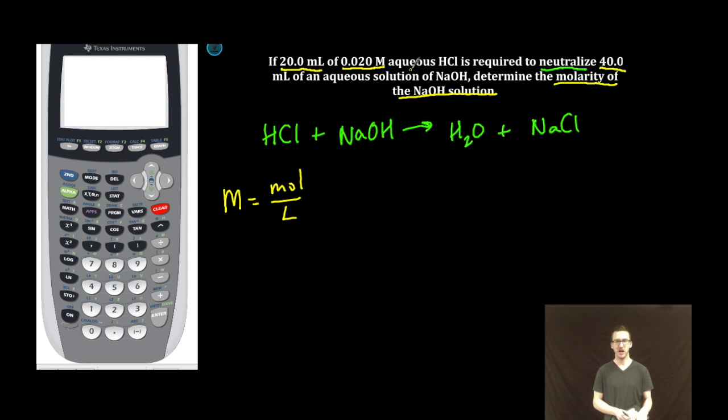The first thing I'm going to do is use the volume and molarity of the known solution, in this case, HCl. I know the concentration is 0.020 molar, and I know that to neutralize all of the sodium hydroxide, I need to use 0.0200 liters.